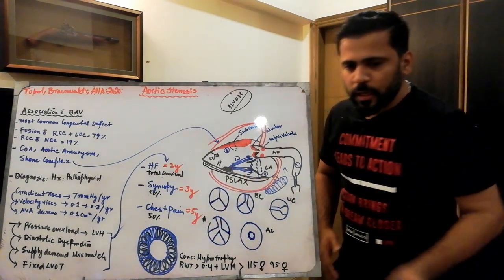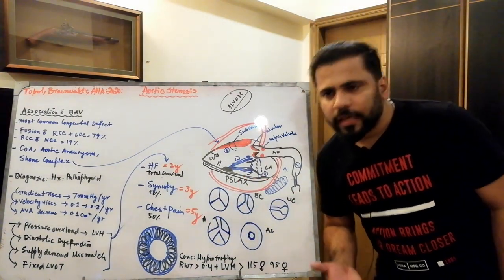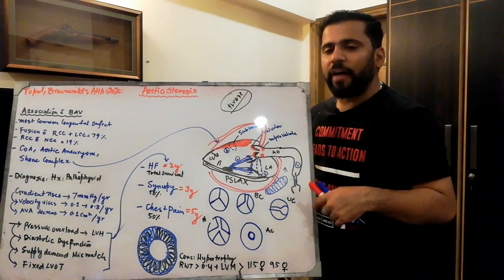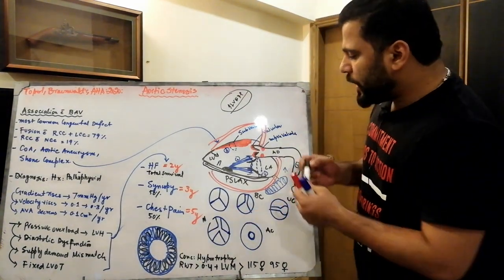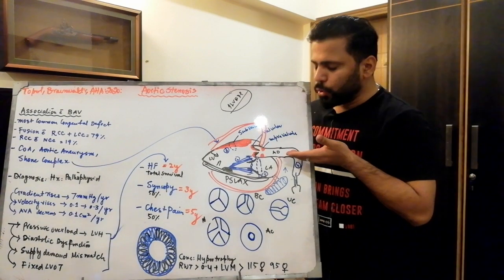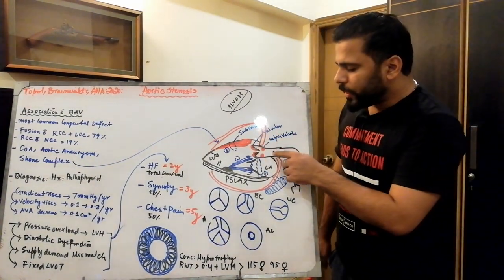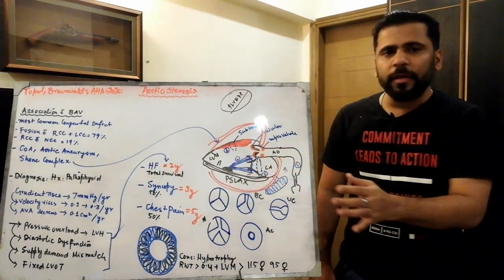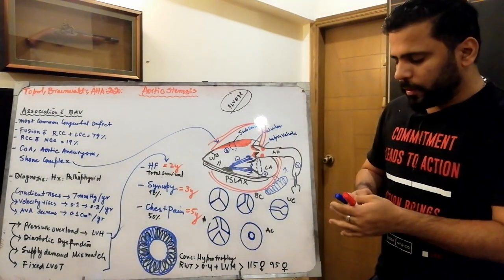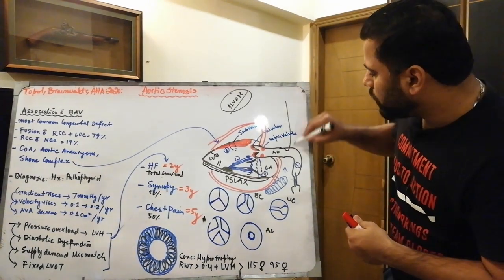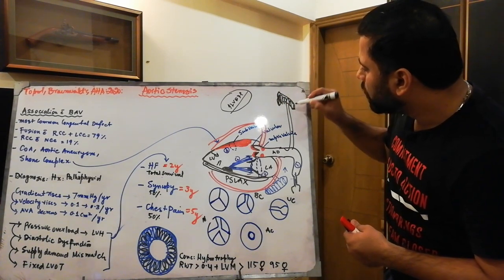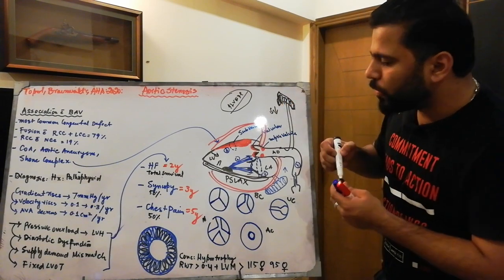Because of this supply-demand mismatch, patients feel chest pain — less supply but more demand as the LV contracts harder to push blood across the stenotic valve. Additionally, there is a fixed output from the LV due to the aortic stenosis. When there is increased peripheral demand or peripheral vasodilation, blood flow to the brain decreases, causing syncope.